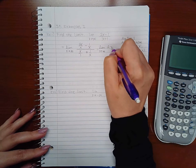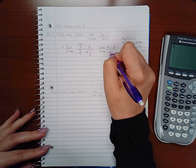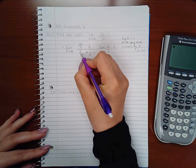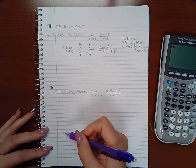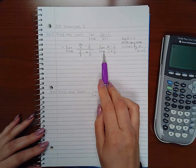I get (2 minus 1/x) over (1 plus 1/x). Then as x goes to infinity...